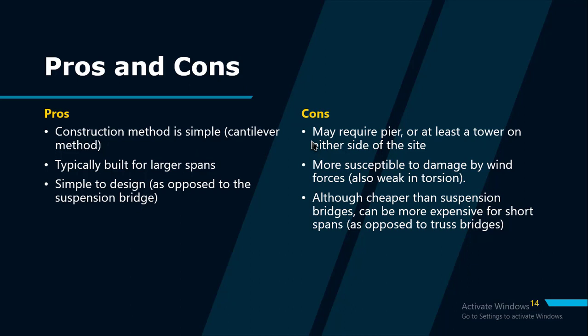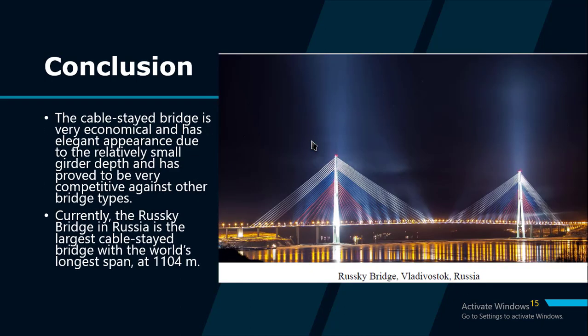Pros of cable-stayed bridges: the construction method is simple using the cantilever method; typically built for larger spans; simpler to design and erect compared to suspension bridges. Cons: may require a pier or at least a tower on the other side of the site; more susceptible to damage by wind forces and torsion; also, while cheaper than suspension bridges, they can be more expensive for short spans compared to truss bridges. In conclusion, a cable-stayed bridge is very economical with an elegant appearance due to the relatively small girder depth, and has proved very competitive against other bridge types. With developments in bridge design and construction, more cable-stayed bridges are being built with longer spans. Currently, the Russky Bridge in Russia is the largest cable-stayed bridge with the world's longest span at 1,104 meters.